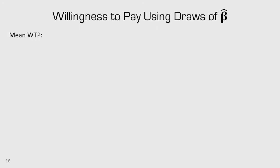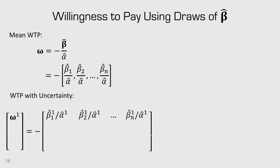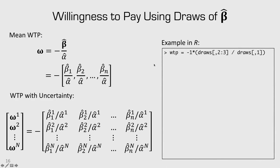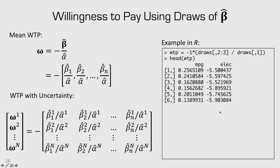Once we have all these draws, we can use them to compute different values. Before, I showed how to compute the mean willingness to pay by dividing the vector of betas by the price coefficient. To include uncertainty, we do the same thing for every draw of betas. The superscript 1 represents the first draw, so omega 1 — willingness to pay for the first draw — is beta1 over the price parameter and beta2 over the price parameter. In R, since the first column in the draws is the price coefficient, we take the other two columns, divide by the price coefficient, and multiply by negative 1.